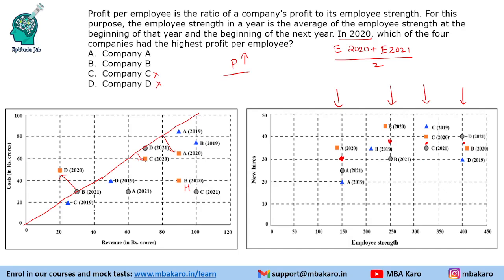For B, profit is 50 (90 minus 40) and employee strength is 250, giving profit per employee of 50/250 = 1/5, which is 20 lakh per employee. For A, profit 25 divided by 150 gives about 16.67 lakh per employee. So B has the higher profit per employee. Just by observation, B has very high profit compared to any other company, so the answer is company B.